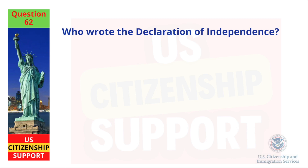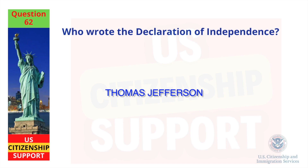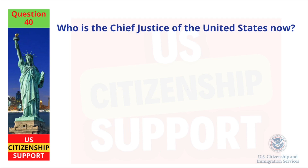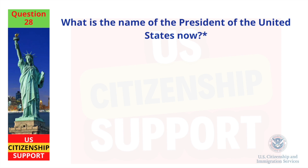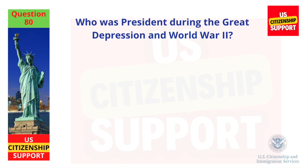Who is the chief justice of the United States now? John Roberts. What is the name of the president of the United States now? Joe Biden. Who was president during the Great Depression and World War II? Franklin Roosevelt.